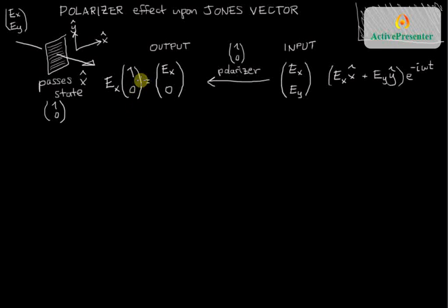What I'm emphasizing here is that if you send anything, any state, through a 1, 0 polarizer, you know that you're going to get a 1, 0 aligned state out. It has to be x-hat polarized. How much of the field there's going to be will depend upon how much x there is in the initial state.